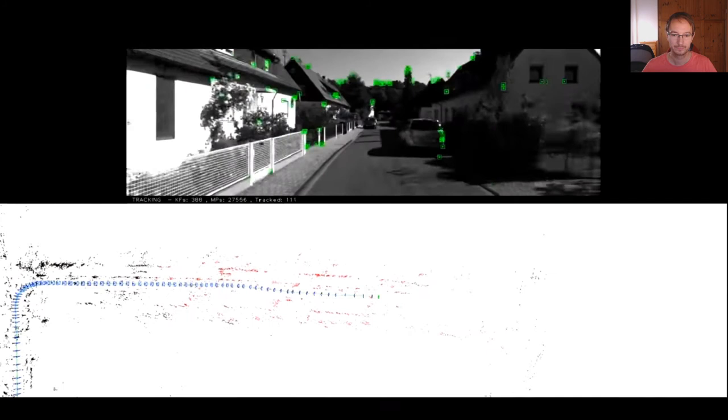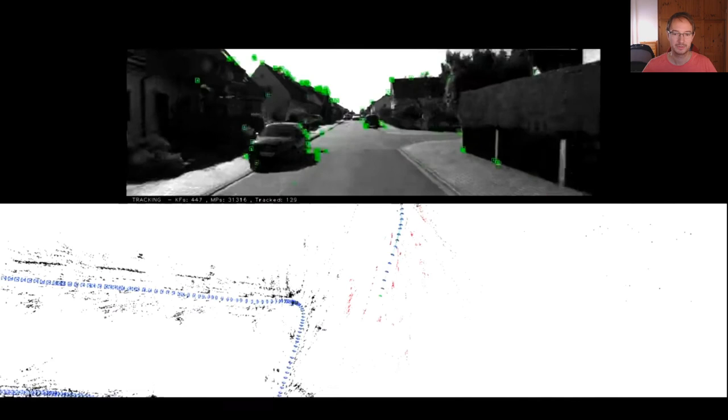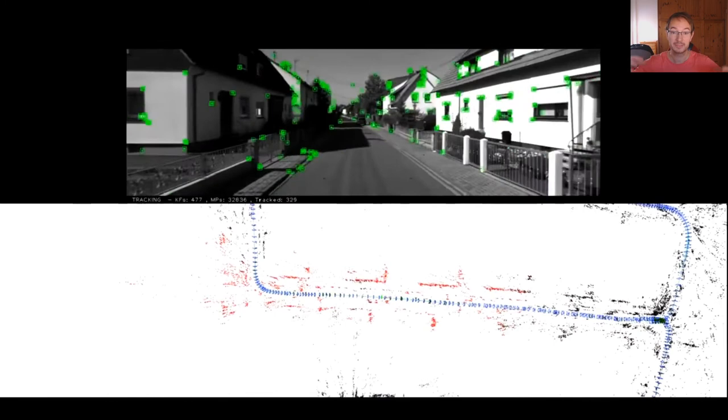You can see that now the vehicle arrives at the same location and the loop closure has been detected. And now including these constraints into the optimization snaps these two parts of the map together and makes it more consistent. Now of course this only works if you actually visit the same place multiple times, so this is a central aspect of SLAM.